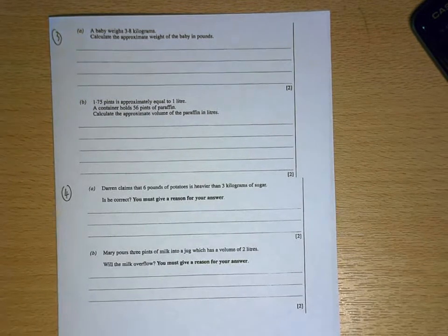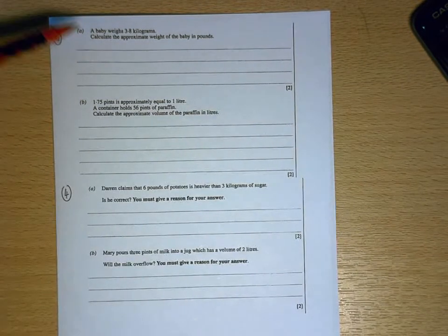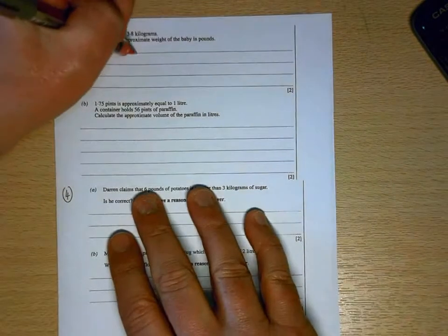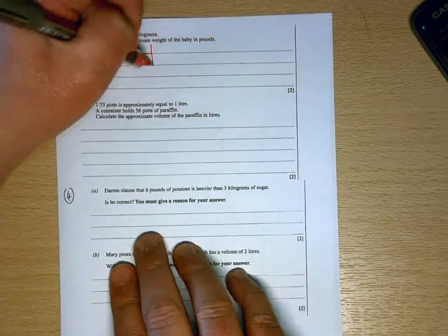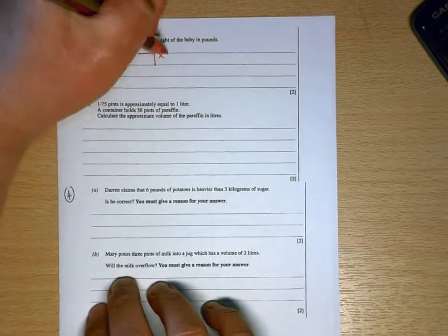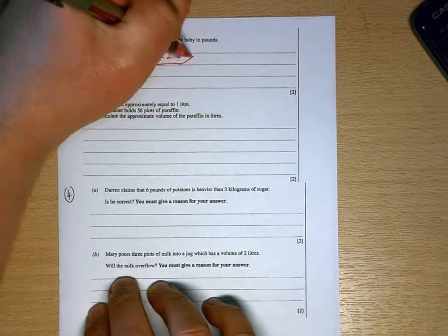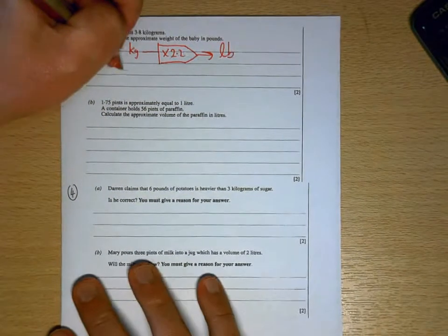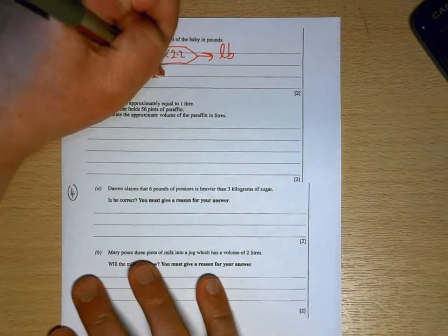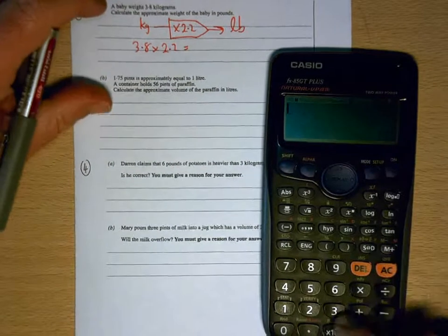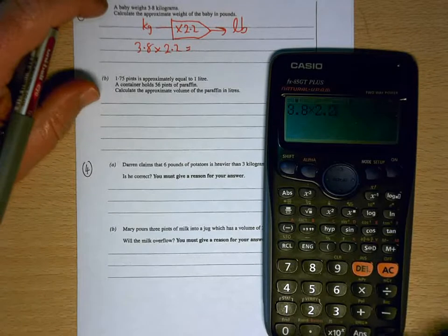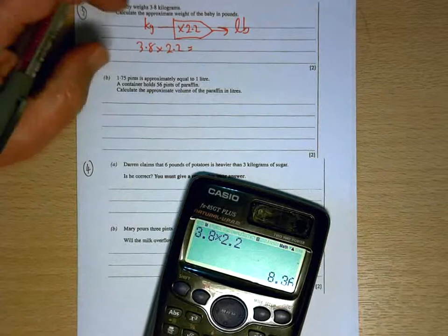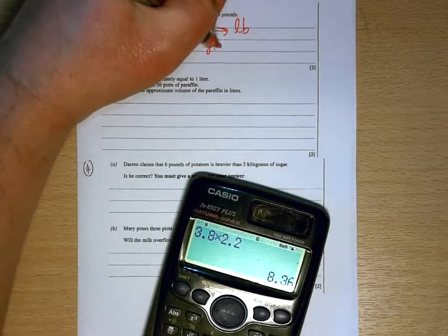And question three, again with this one, they aren't giving you the relationship between kilograms and pounds. It's one of the ones they expect you to know. We met it in a previous question: one kilogram is roughly 2.2 pounds. So 3.8 kilos times 2.2 equals 8.36 pounds.